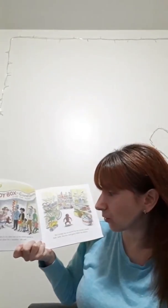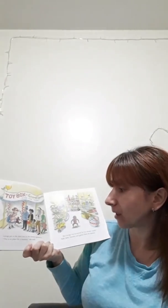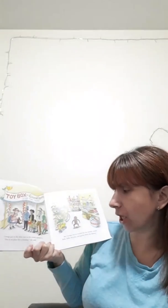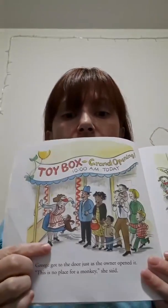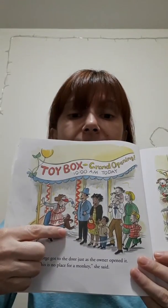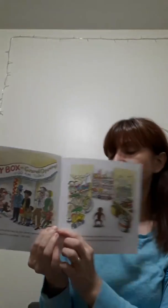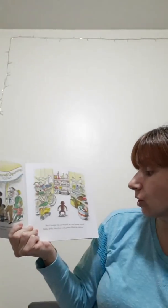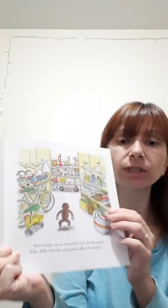George got to the door just as the owner opened it. This is no place for a monkey, she said. So let's look. This is how the owner looks. And this is the monkey. George really wanted to go inside. But George was so excited, he was already inside. What did he see there?